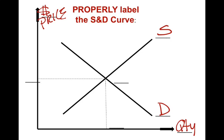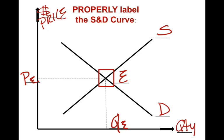The key point is that we're going to have a point in the middle called equilibrium. We're going to label this E. Down here we label this quantity E, and up here price E, or equilibrium. That is a properly labeled supply and demand curve — you've got to know that, because we're going to be using language that's reflective of this curve.